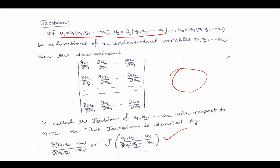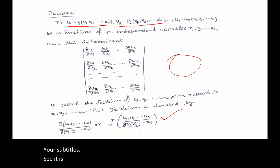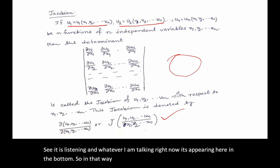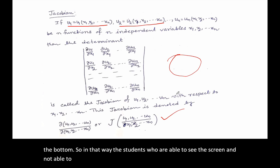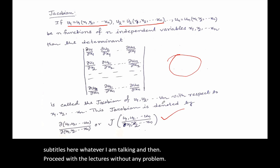One more thing I usually face is that some of my students staying in remote places are not able to hear my audio because of network problems. PowerPoint has a nice feature for this. If you go to the second or third option in the bottom menu and click on it, it automates your subtitles — it's listening and whatever I'm talking right now appears at the bottom. Students who can see the screen but cannot hear the audio can at least read the subtitles and follow the lecture.